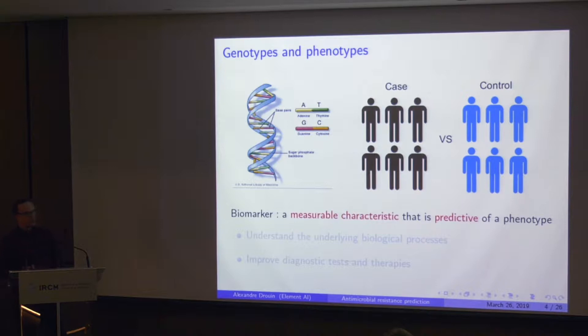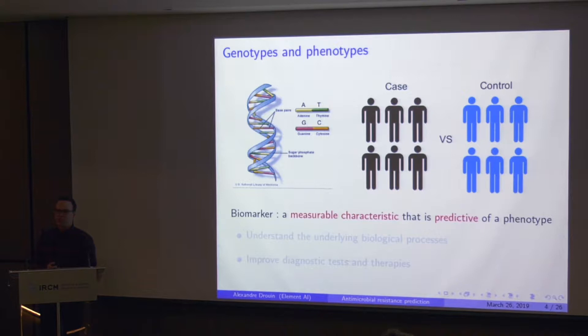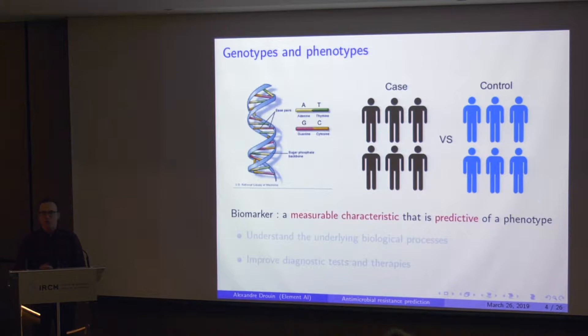What's a genotype and what's a phenotype? A genotype is the set of characteristics of the DNA of an individual — the set of mutations in the genome. A phenotype is the set of observable characteristics, such as whether an individual has a given disease, or whether they resist a given treatment. Our objective is to find biomarkers — measurable characteristics of the genome — that allow us to predict the occurrence of a phenotype, such as mutations or genes predictive of antibiotic resistance.